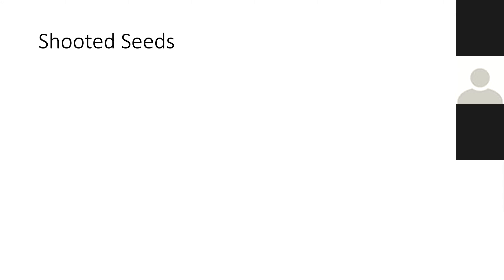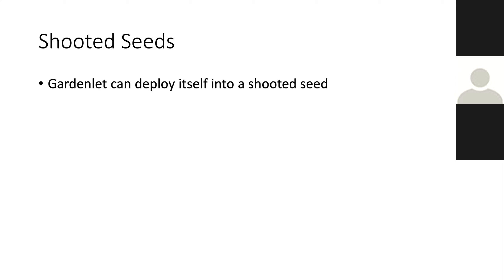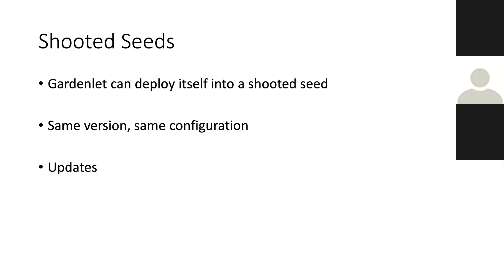Gardener can also deploy shoots that later can be automatically registered as seeds. In the past, this was simply done by creating the seed object. What now happens is the Gardenlet that creates the shoot — which shall then be registered as a seed — deploys itself into this cluster it just created, with the same version and configuration. Whenever this root Gardenlet is updated, it will also update all the Gardenlets in the shooted seeds it is responsible for.